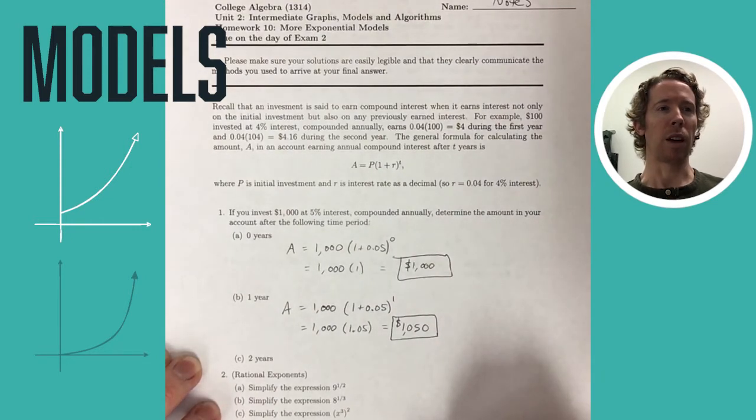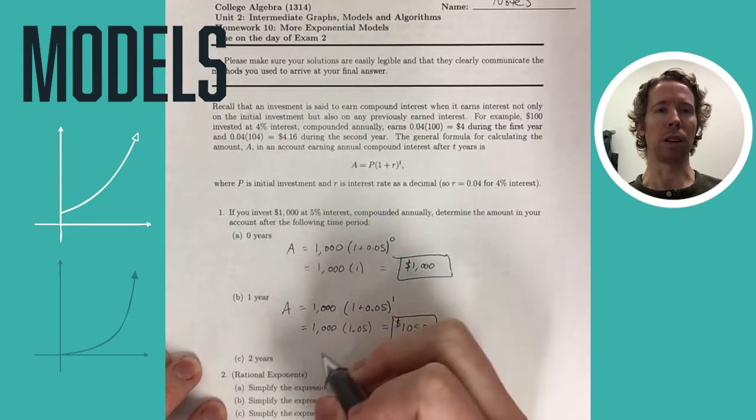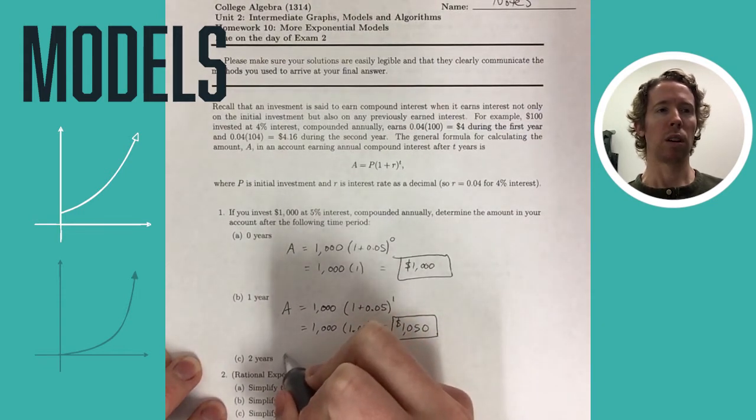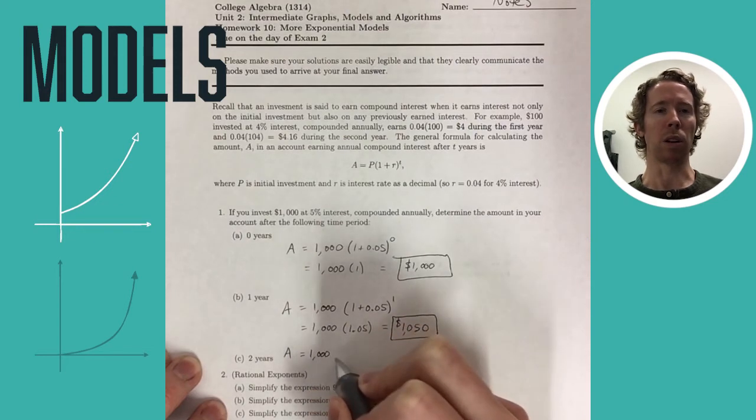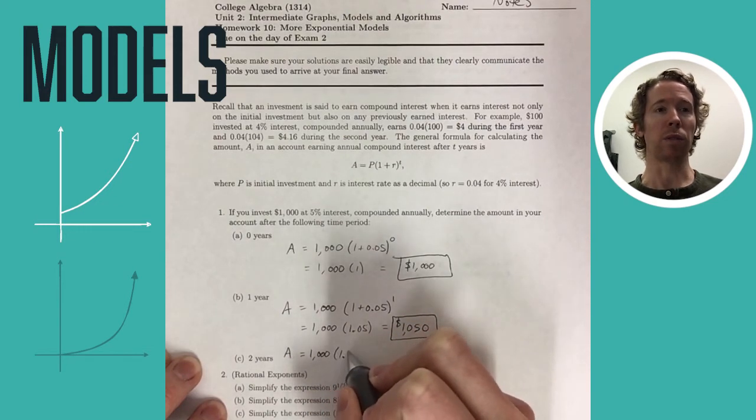And then after two years, you've got the same equation, same formula, but you're plugging in T equals two. That 1.05 that you get when you add one plus the rate, we'll have to square that.